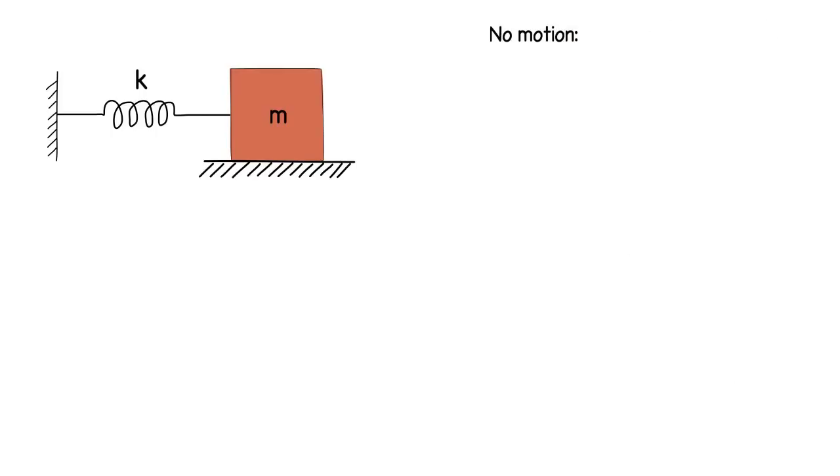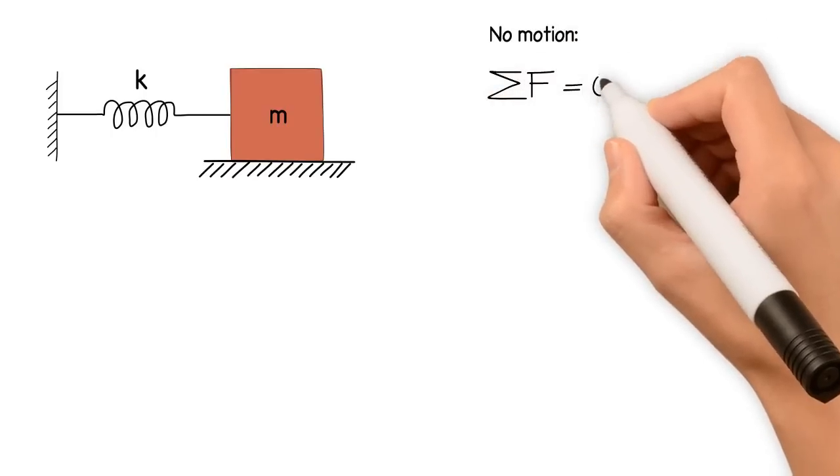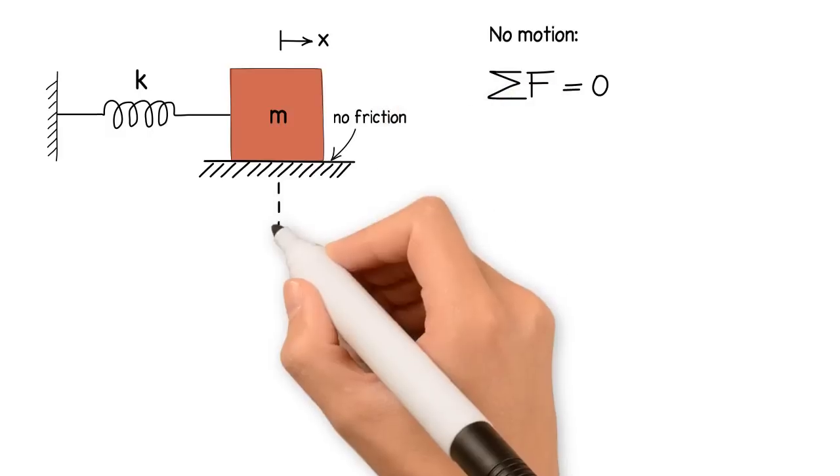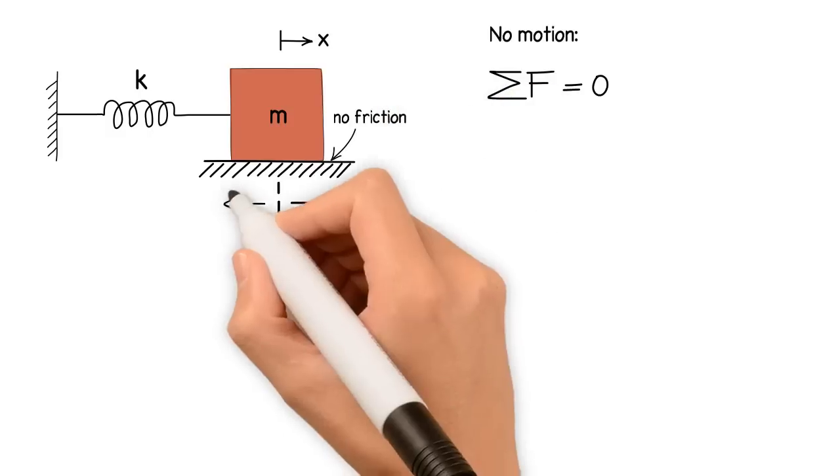Before this mass is set into motion, as we know, the net force on the system is zero. Now let's pull the mass by x and let it go. We assume the floor has no friction, and the mass will oscillate back and forth around its resting position.